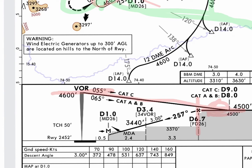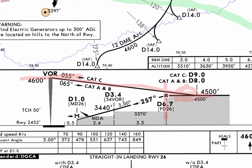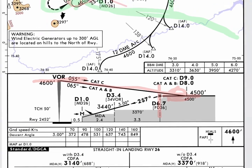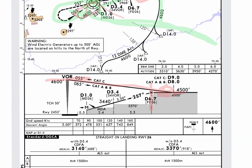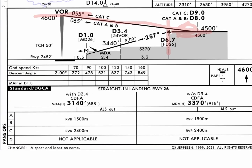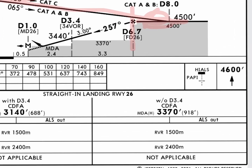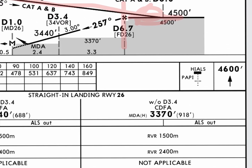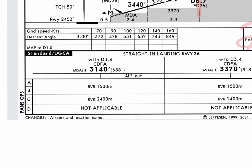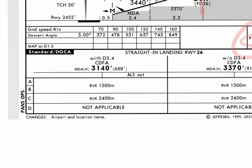Then join the final approach track. The final approach fix is at 6.7 DME, so before that configure your radar. PAPI is left of the runway, and high-intensity approach light system is available. Missed approach at 4600 feet, visibility requirement 1500 feet.